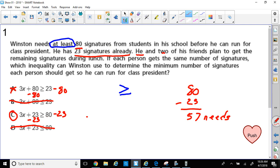Winston and two of his friends, that's a total of three people, plan to get the remaining signatures during lunch. So if three of them are going to get signatures during lunch, I'm just going to say three times what number should they get to get to 57. That's the least amount they would need. So I would divide that by three, and that's if I wanted to solve the problem. But I'm not going to solve the problem because they didn't ask us to solve the problem. They just asked us to write the inequality. So three of his friends, three times something or 3x, plus 23 that he already has, has got to be more than or greater than or at least 80 signatures.